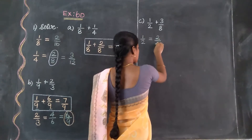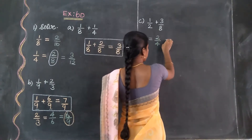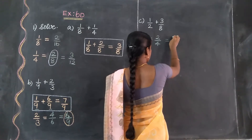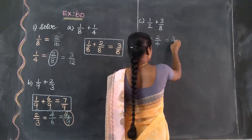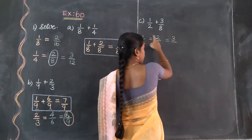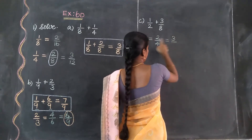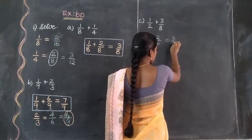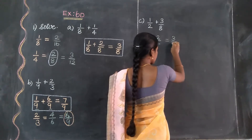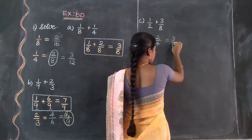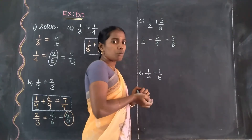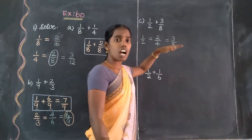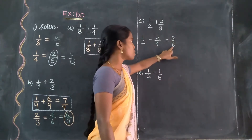4 twos are 8. The other value is 3. So 1 two is 2, 2 twos are 4, 4 twos are 8. We stop here because the last term number matches the denominator value of 8.